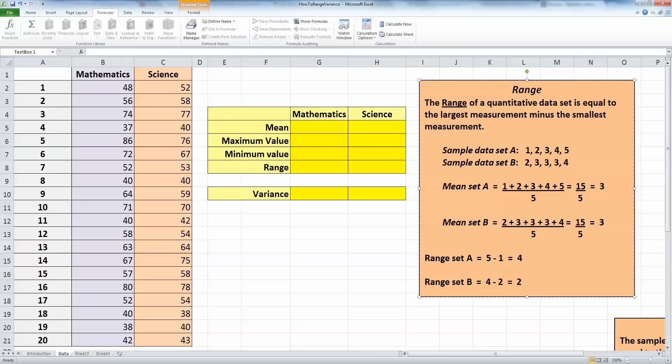And when I do the same for range for set B, the highest value is 4, the lowest is 2, subtract one from the other and that gives us a value of 2.